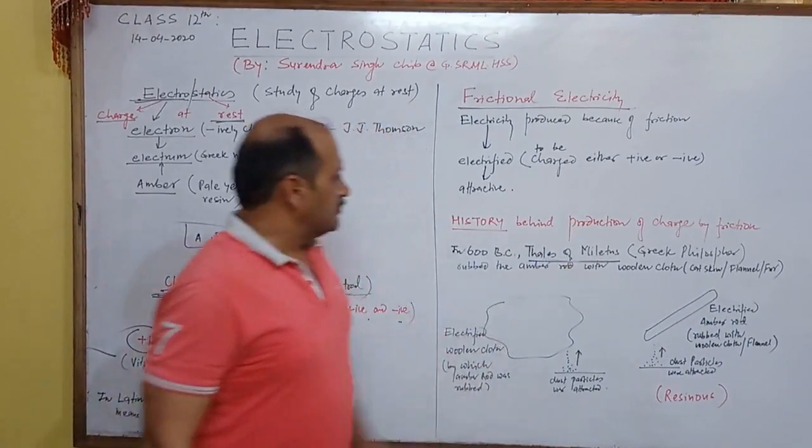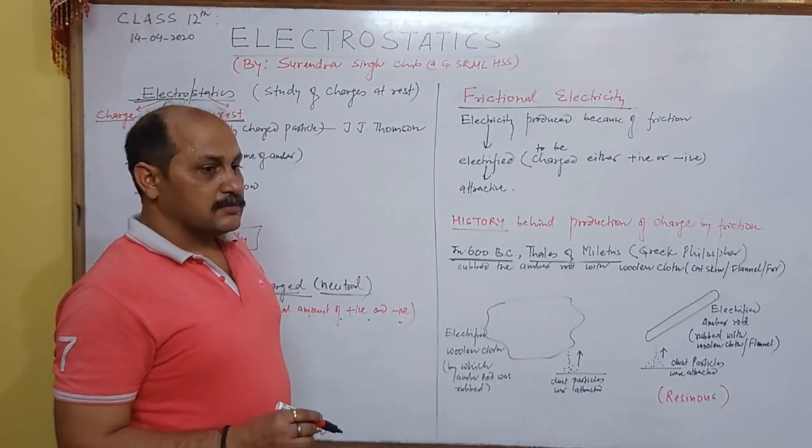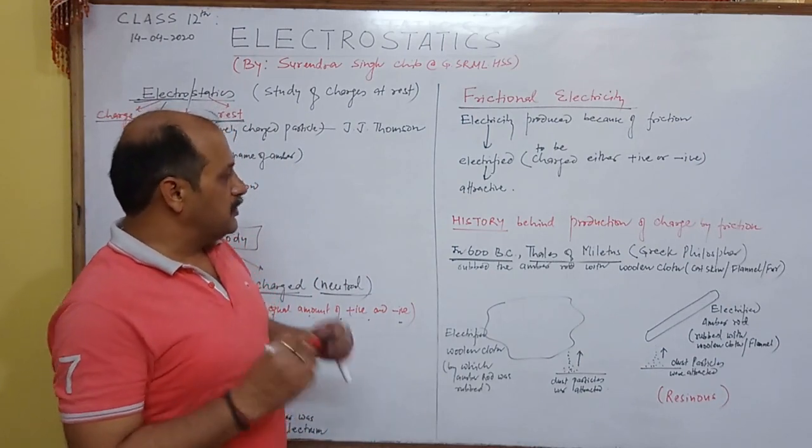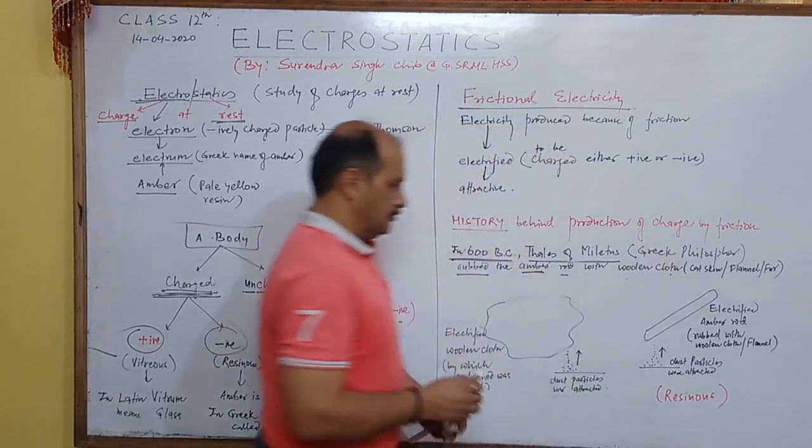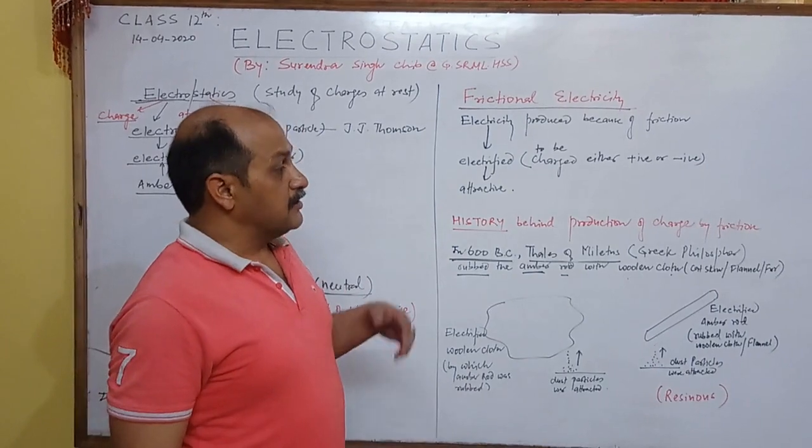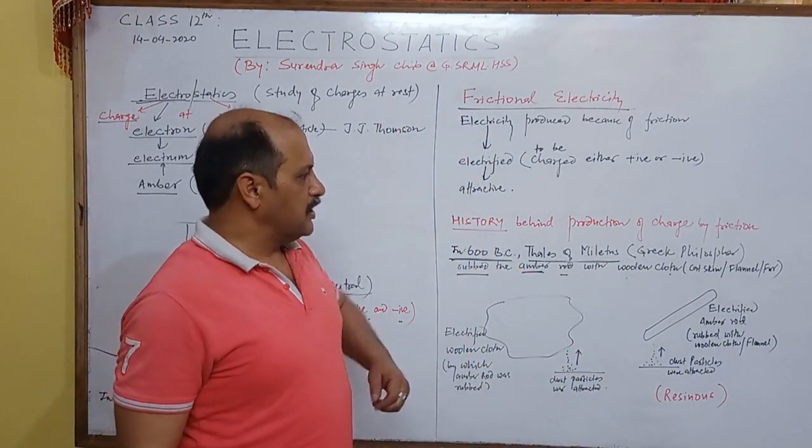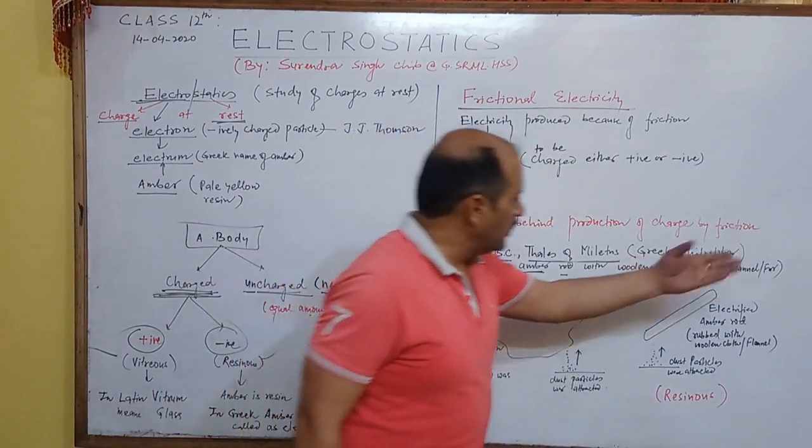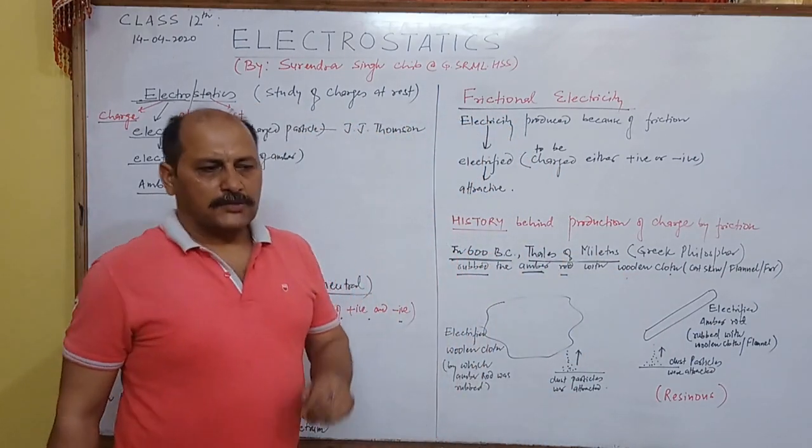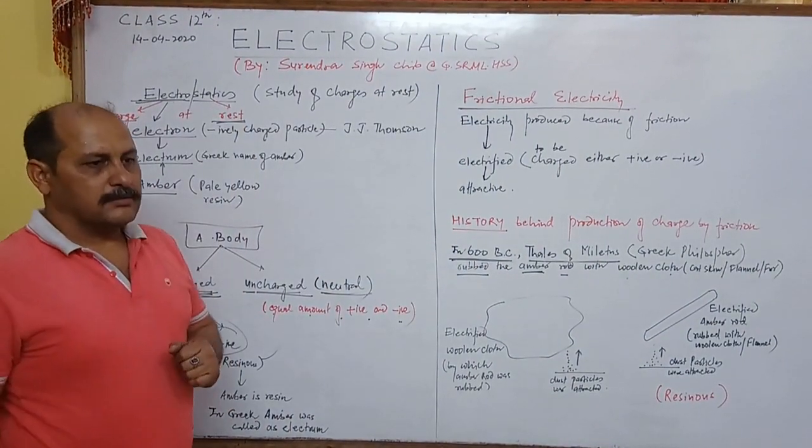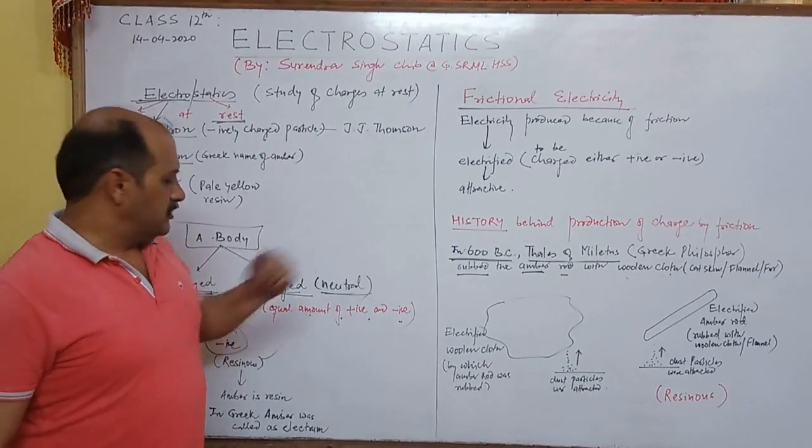Let me explain how the charges are formed. And I am giving respect to the father of electrostatics. Thales of Miletus, who are the Greek philosopher, in 600 BC, around 2600 years ago, he has done an experiment. What he has done? He rubbed the amber rod with woollen cloth. What is a woollen? It is a fur, you can say. Cat skin is also there. Flannel is the other name of cat skin. All these things, comes under a common thing called woollen. Amber is pale yellow in colour. It is a resin. That is obtained from trees.